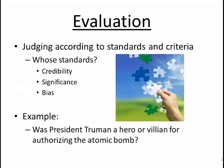The next step is evaluation. This is where you judge according to standards and criteria. The challenge becomes when you ask the question: whose standards? To determine this, you look at credibility, significance, and bias. For example, was President Truman a hero or a villain for authorizing the dropping of the atomic bomb? For the Americans, they may consider Truman a hero for bringing World War II to a close. If you lived in Hiroshima or Nagasaki, you may have a different opinion.